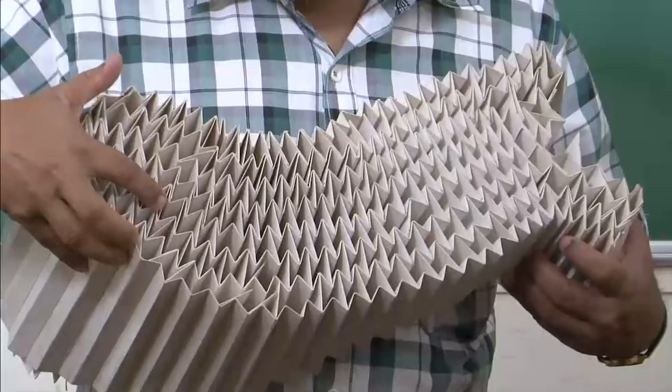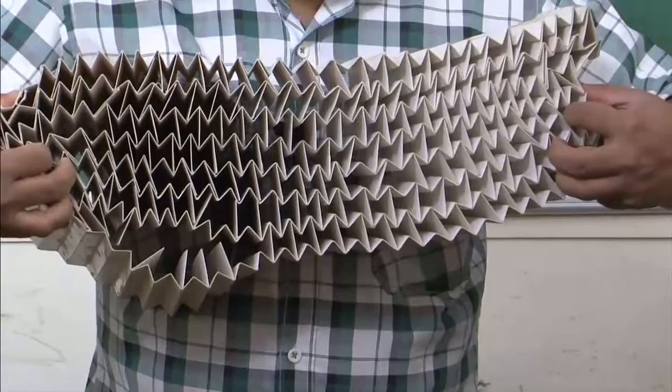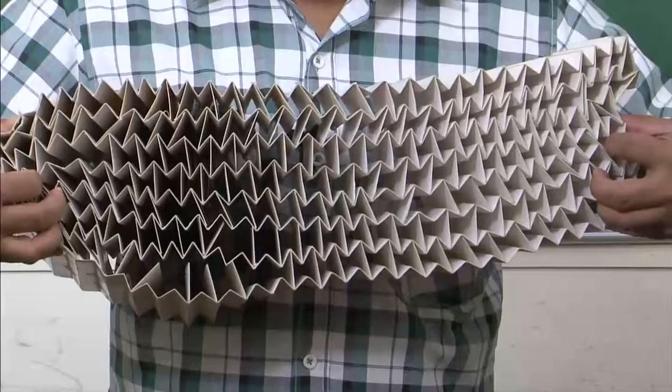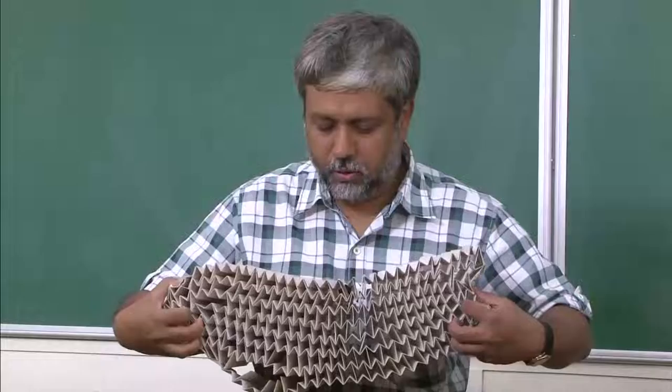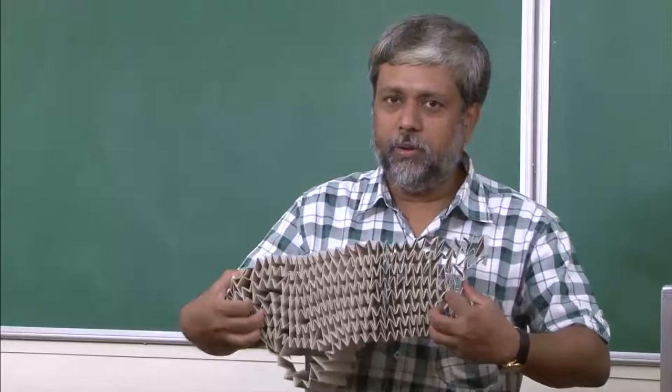When you try to expand the material in one direction, you can see that the perpendicular direction, instead of contracting, is actually expanding. The more these reentrant angles unfold, the more it expands. And when you compress it, instead of expanding in the other direction, it also contracts. So expansion creates expansion and compression creates compression — that is the beauty of an auxetic structure with a negative Poisson's ratio.